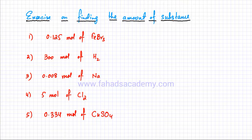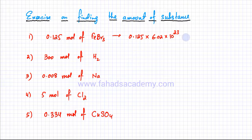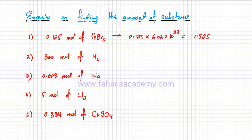In this video lecture, I'll convert a few examples given in moles into the actual number. For 0.125 moles of FeBr₃, I multiply by 6.02 × 10²³. So: 0.125 × 6.02 × 10²³. The answer from the calculator is 7.525 × 10²².